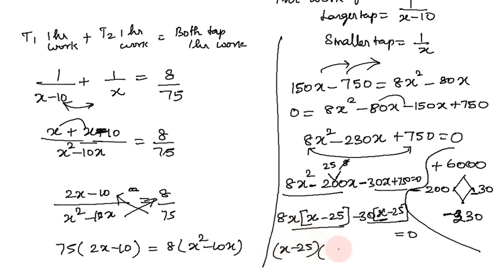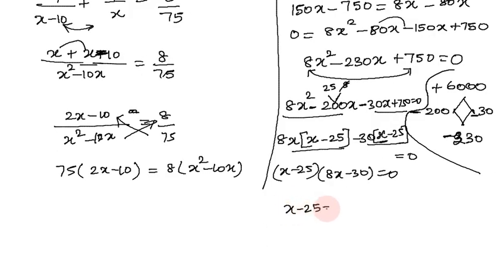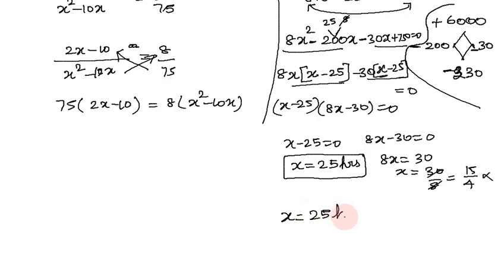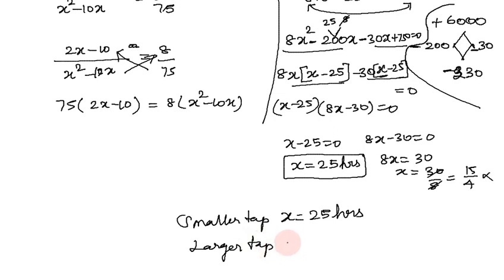Factorizing: 8x minus 30 equals 0 and x minus 25 equals 0. So x equals 25, or x equals 30 by 8 which is 15 by 4. Since 15 by 4 is a fraction, x equals 25 hours for the smaller tap. The larger tap takes x minus 10, that is 25 minus 10 equals 15 hours.